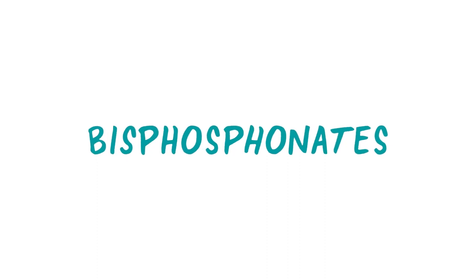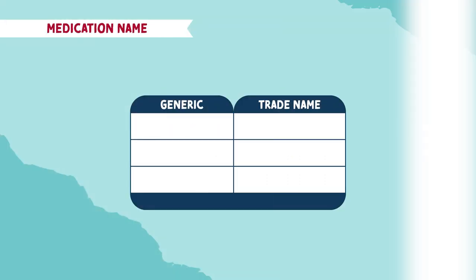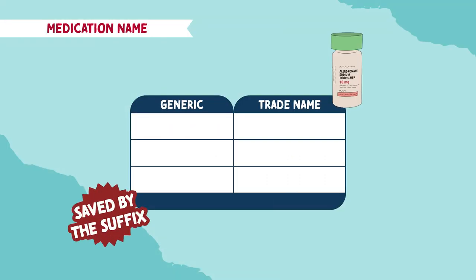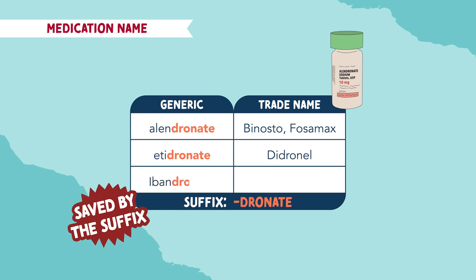Let's talk about bisphosphonates. We are saved by the suffix. The suffix for this medication is '-dronate', like alendronate, etidronate, and ibandronate.